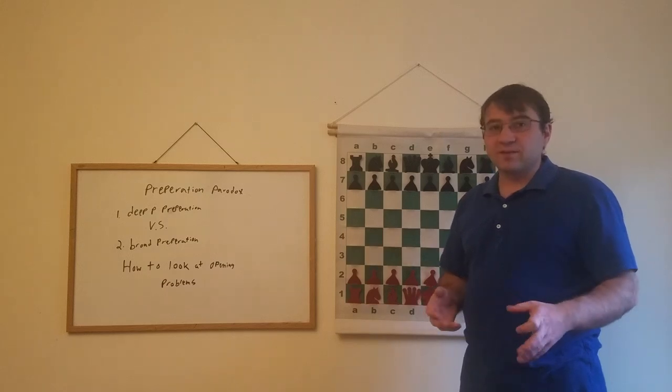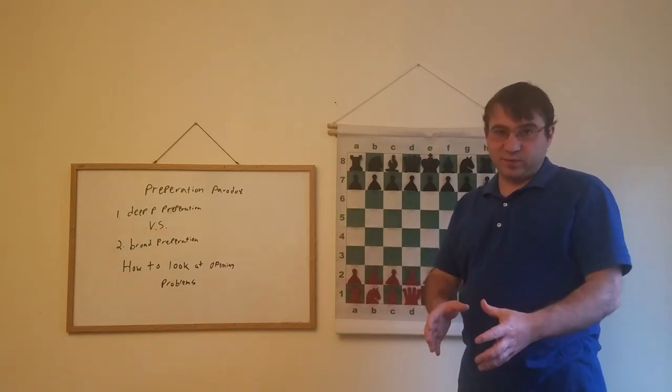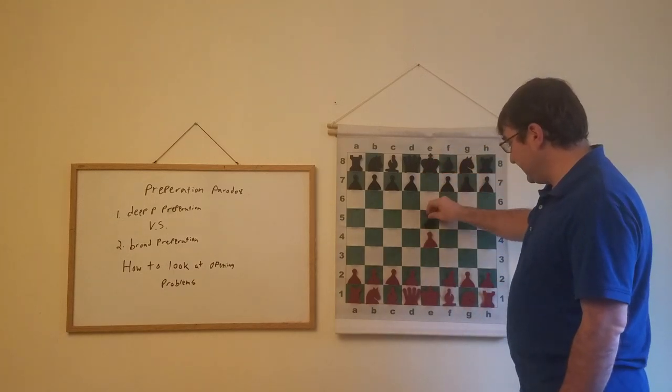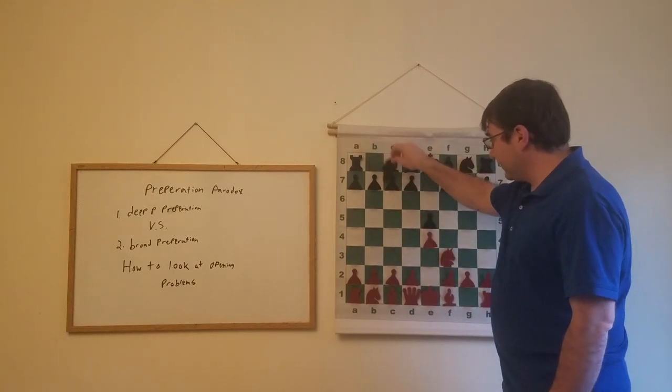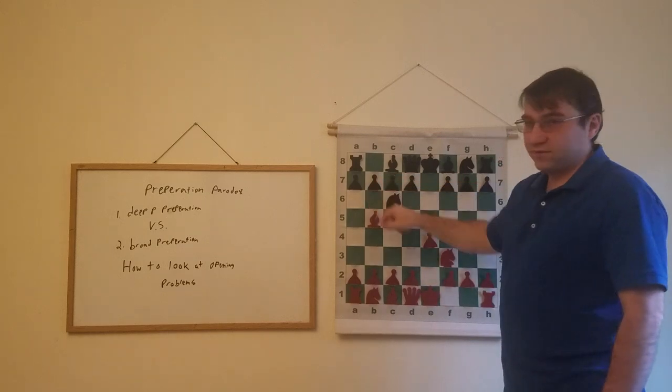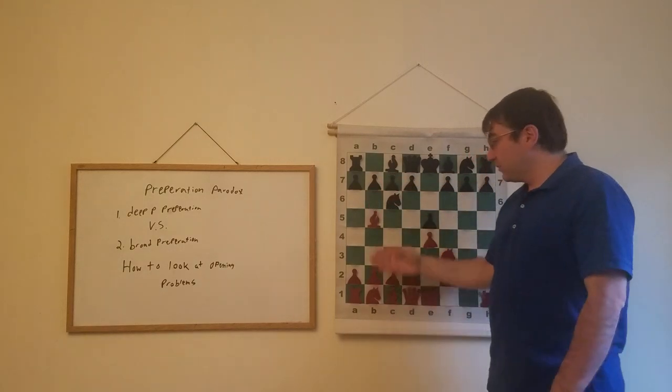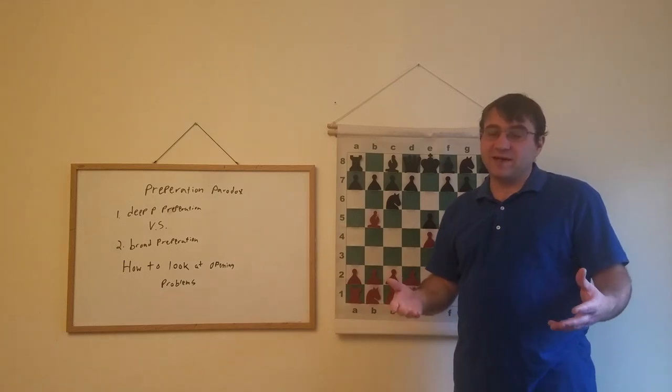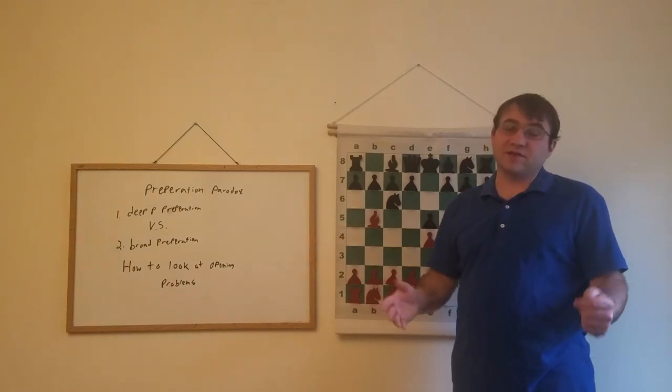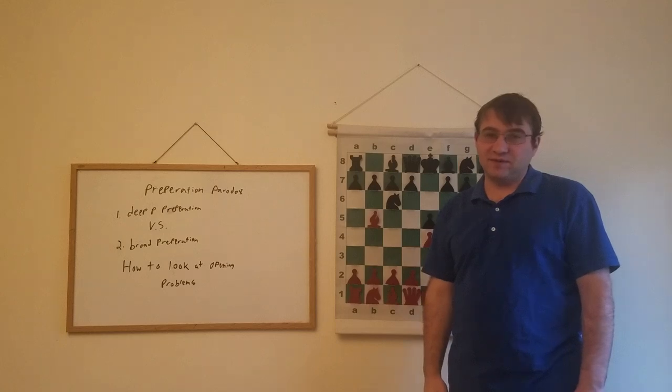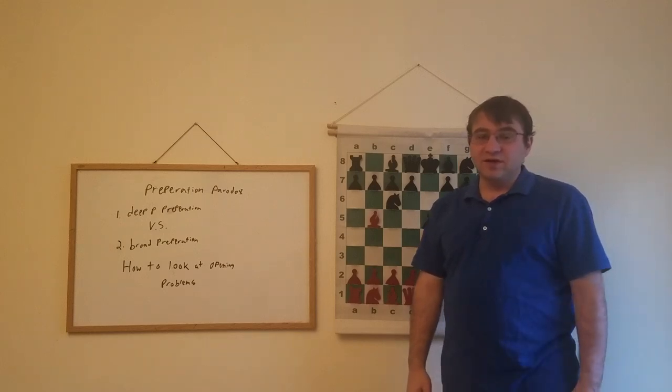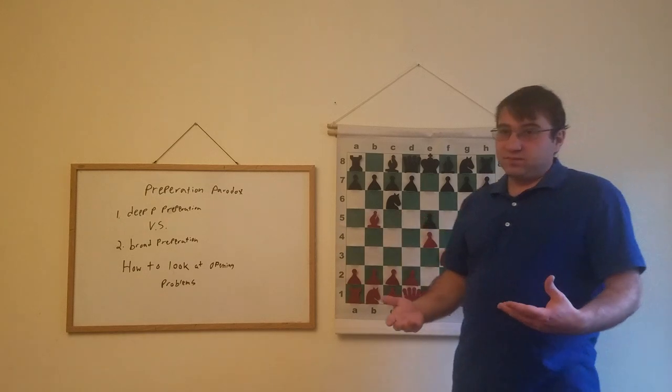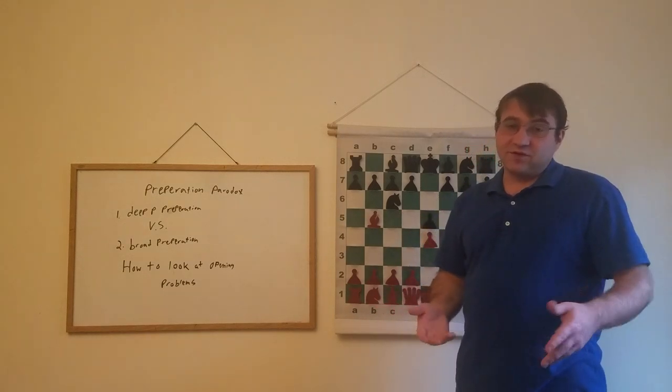An example is after e4 e5 knight f3 knight c6 bishop b5, we have what we call the Ruy Lopez. The Ruy Lopez for white is respected as possibly the best chance for white to get some type of advantage with the white pieces. I think even Gary Kasparov said as much at one point. The problem with bishop b5 is also its strength.